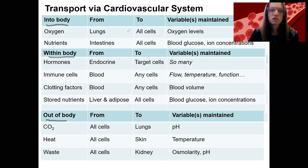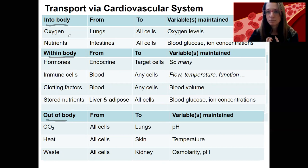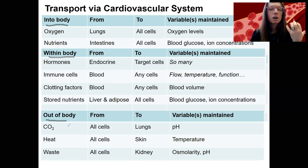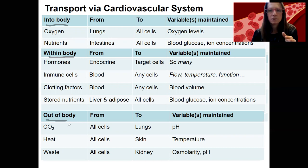Oxygen goes from the lungs to all cells — these are things coming into the body from outside that blood needs to transport. Hormones, immune cells, clotting factors, and stored nutrients are things transported within the body. Carbon dioxide, heat, and waste are transported out of the body. Waste can actually come from more than just the kidney.